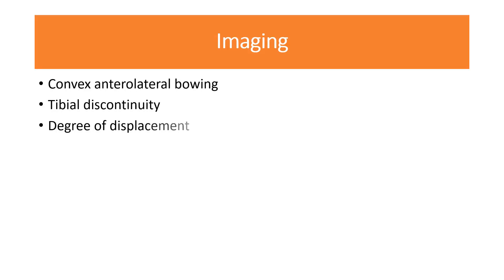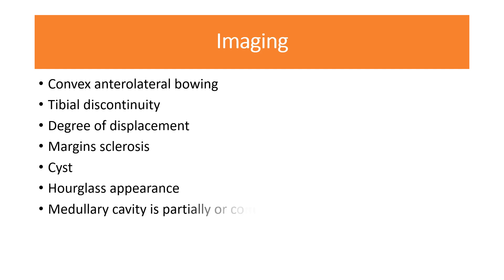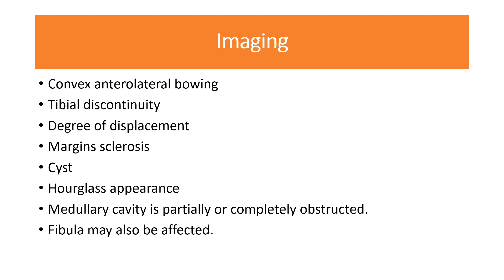X-rays are usually diagnostic. Plain radiograph may show convex anterolateral bowing and possible tibial discontinuity. One should observe the degree of displacement, comment on sclerosis involving the margins, and assess for any cyst or hourglass appearance — as seen in Boyd's Type 2 classification. One should also determine whether the medullary cavity is partially or completely obstructed and whether the fibula is involved.